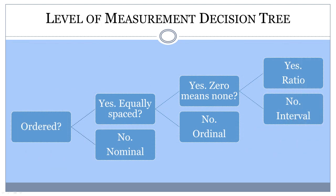To decide what level of measurement a particular variable is at, ask yourself these questions in order. First, is the variable ordered? If not, the variable is nominal. If it is ordered, ask yourself if there are equal distances between values. If not, the variable is ordinal.